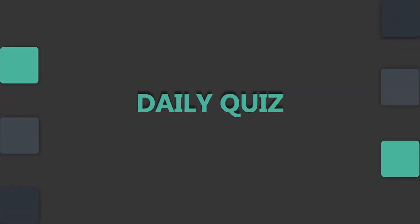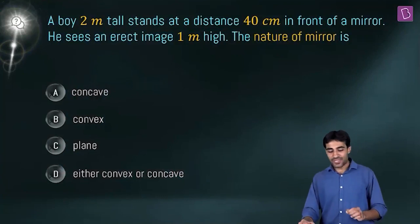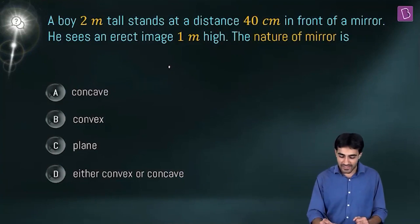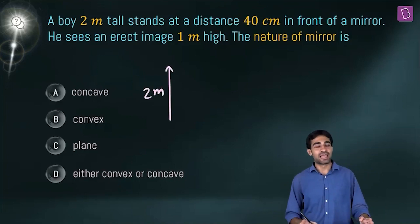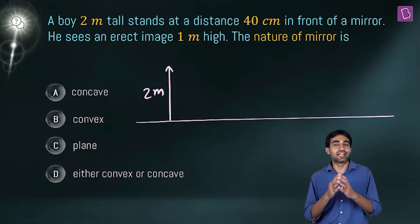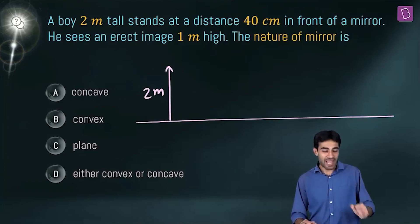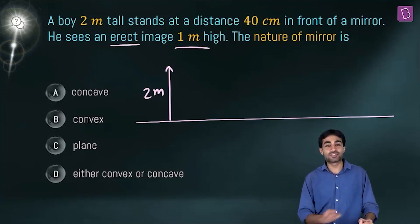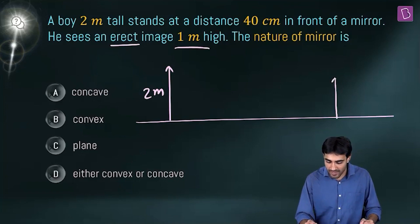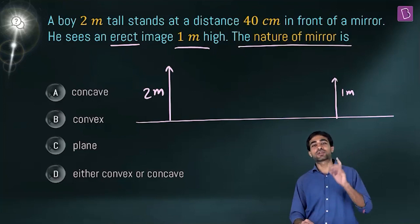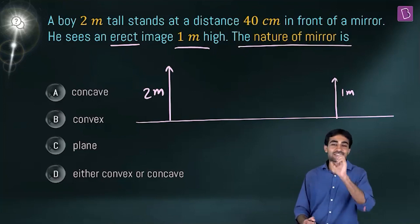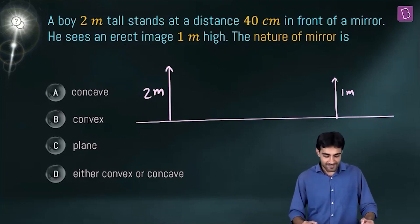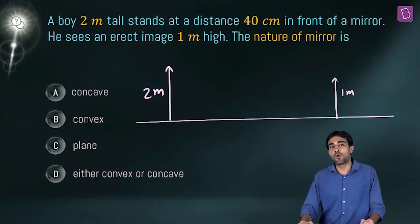Next question: a boy 2 meters tall stands at a distance of 40 centimeters in front of a mirror. He sees an erect image that is one meter high. We have to determine the nature of the mirror. The image is erect and the height of the image is one meter, which is smaller than the object height. Options are concave mirror, convex mirror, plane mirror, or either convex or concave.